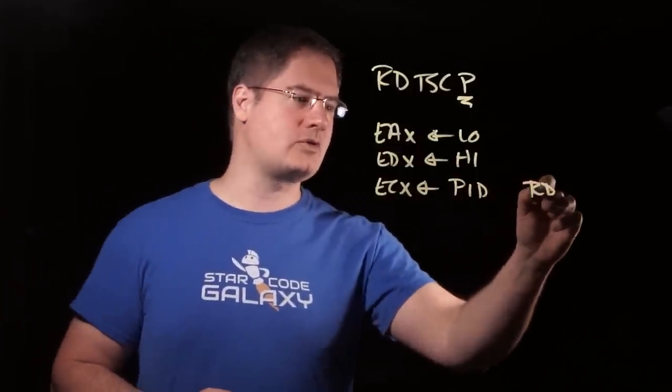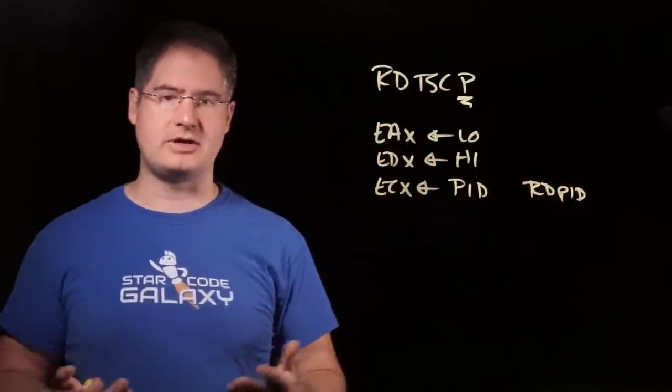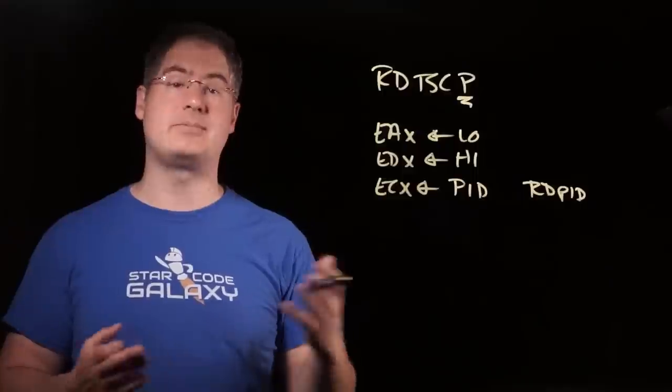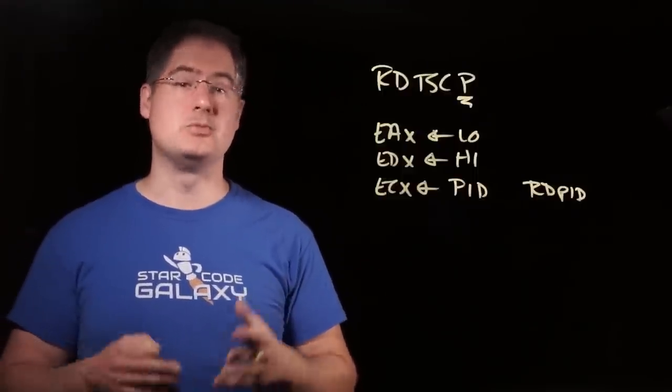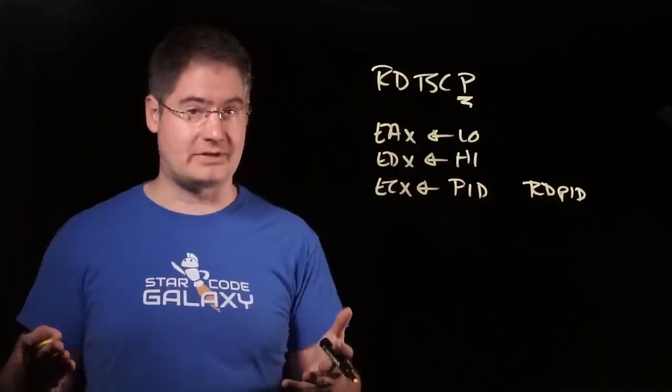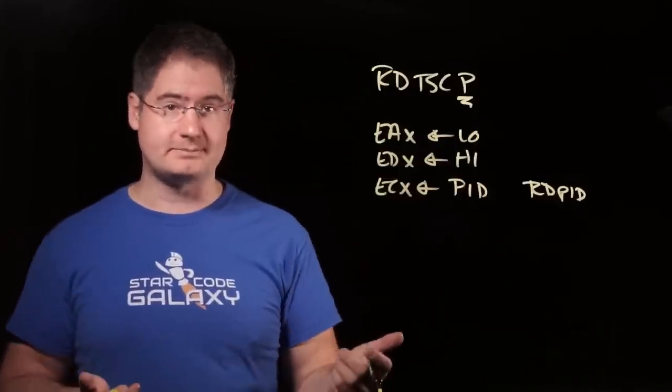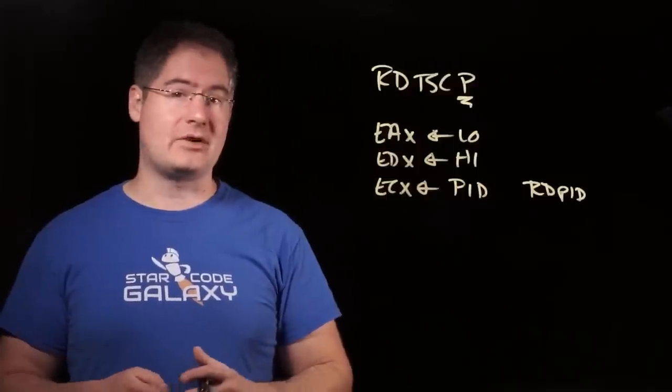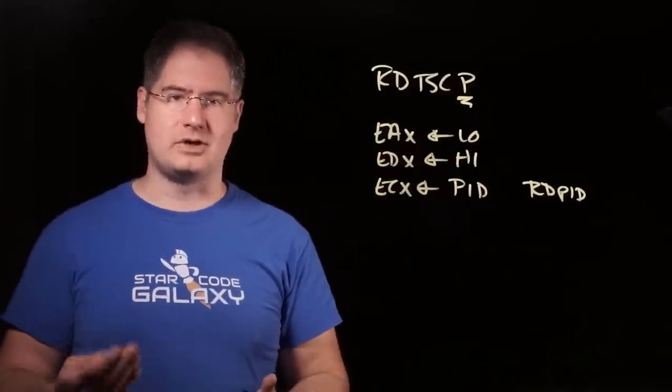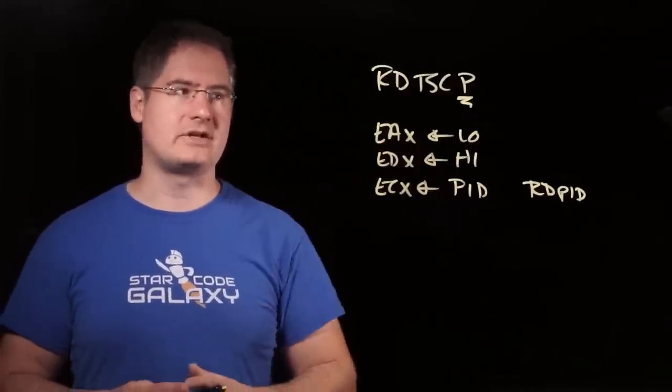This actually has its own instruction. There is an instruction called RDPID you can use just to get that particular piece of information. But because it's the kind of thing that you might want to know when you're writing something like a profiler, right, you want to know which core is running what? Why not get the timestamp counter and the processor ID in one convenient instruction? And that is RDTSCP.